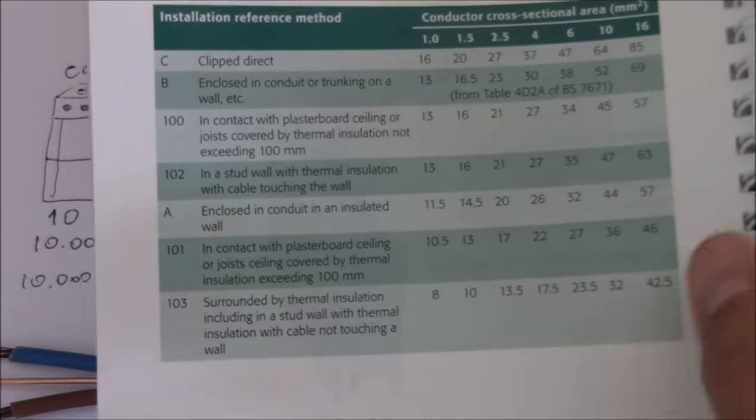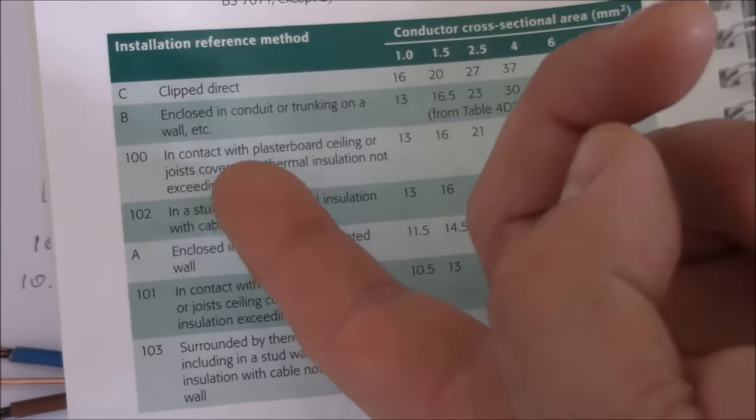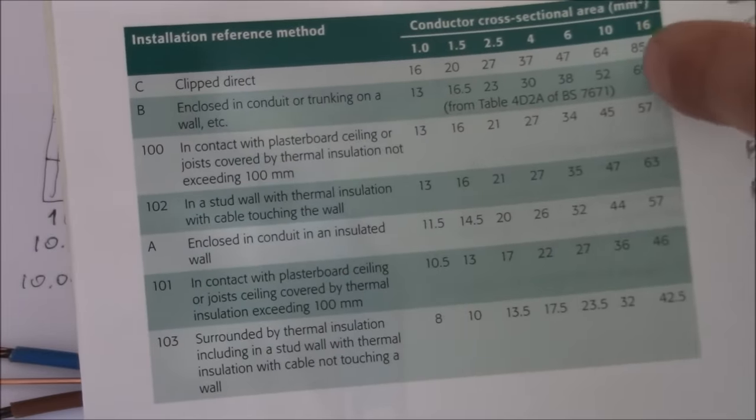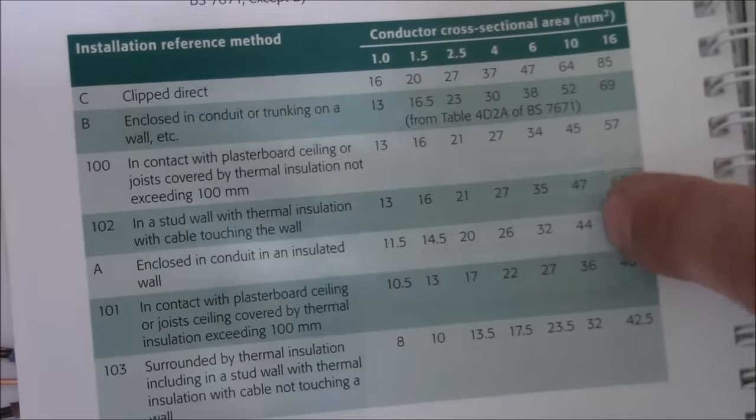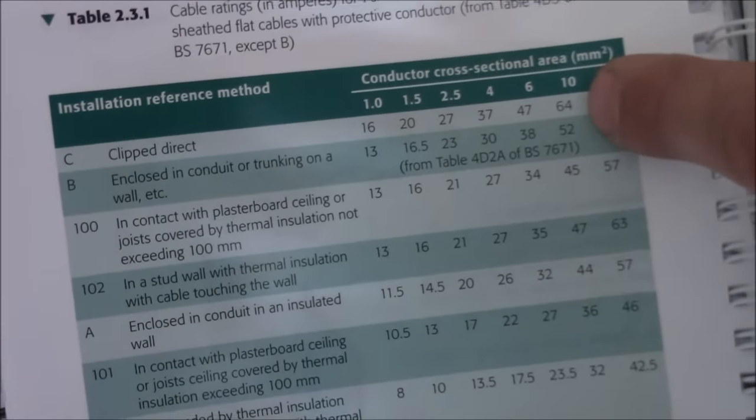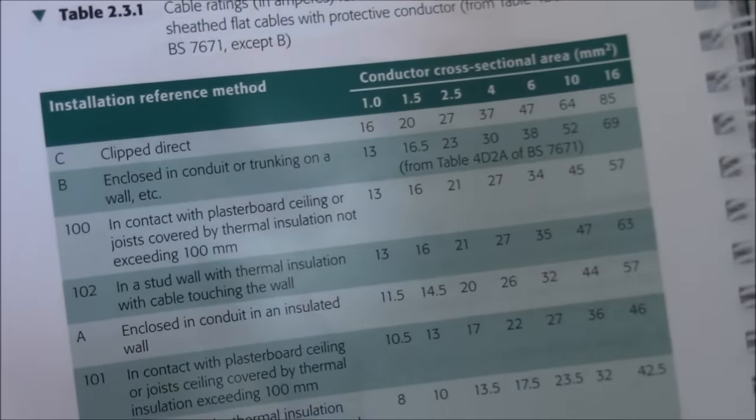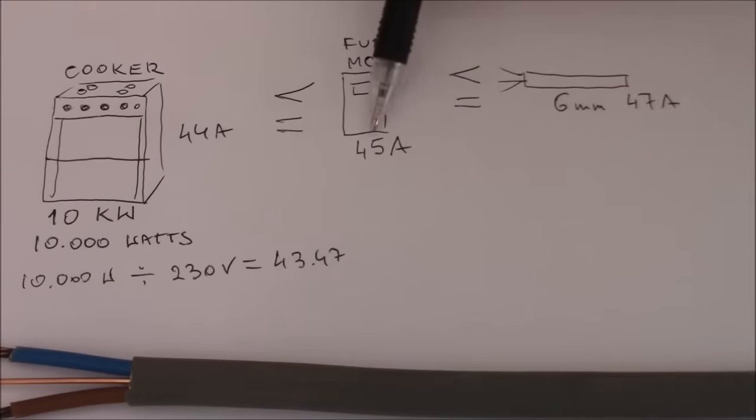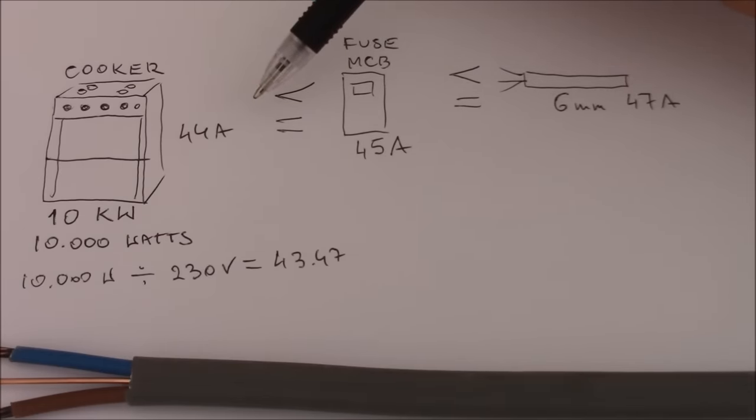So if you use the same cable and install it for example touching the insulation, then obviously the rating goes down quite a bit and then you have to use the 10 mm cable. So as you see these numbers are just minimum. It's very close to the 44 amp that our cooker draws. So basically I would suggest anyway to install a 10 mm cable as nobody at home installs it by clipping it to the wall. So basically 10 mm cable would be much much better.